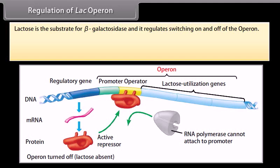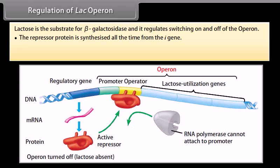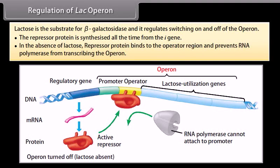Regulation of lac operon. Lactose is the substrate for beta-galactosidase and it regulates switching on and off of the operon. When lactose is absent, the repressor protein is synthesized all the time from the I gene. In the absence of lactose, repressor protein binds to the operator region and prevents RNA polymerase from transcribing the operon.